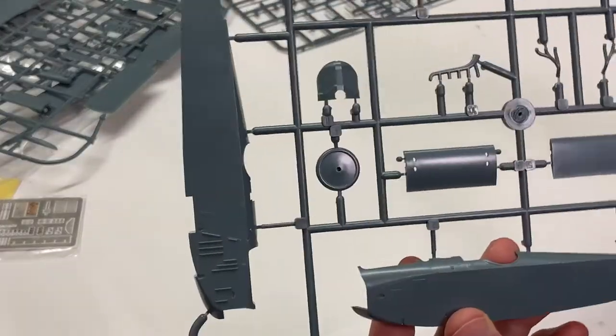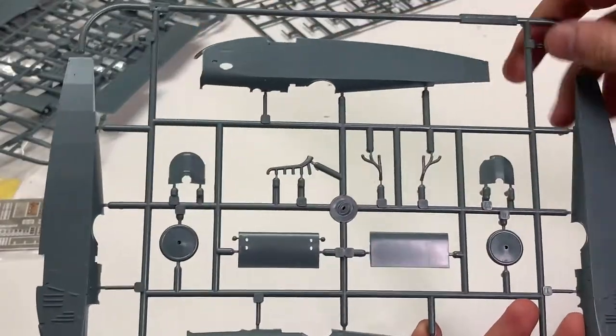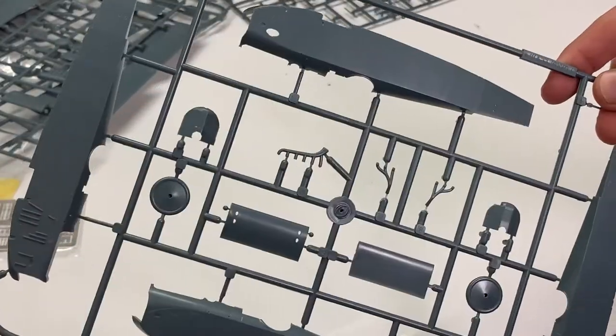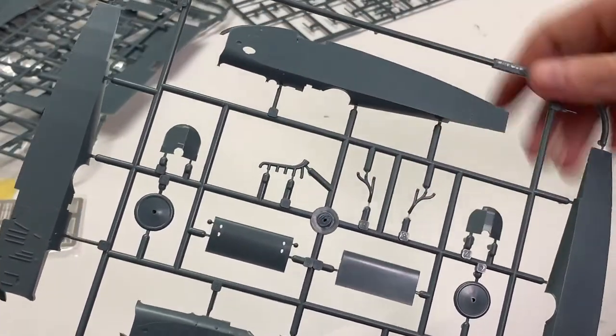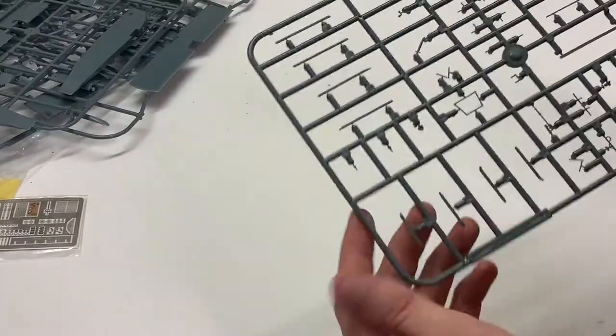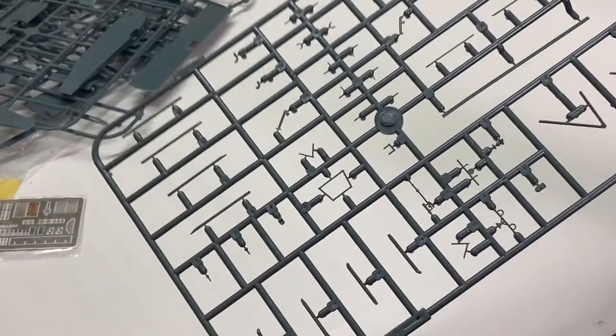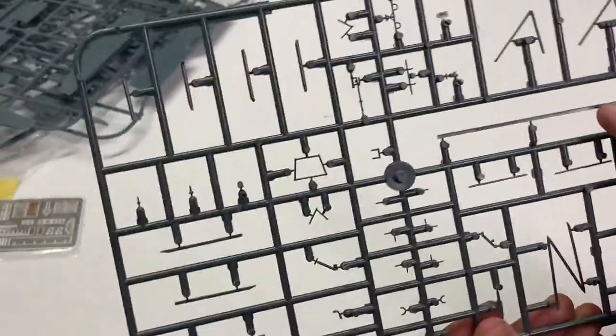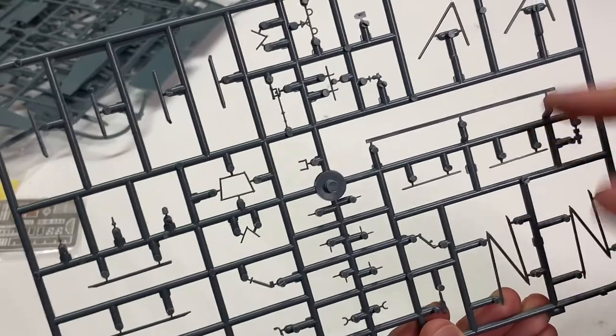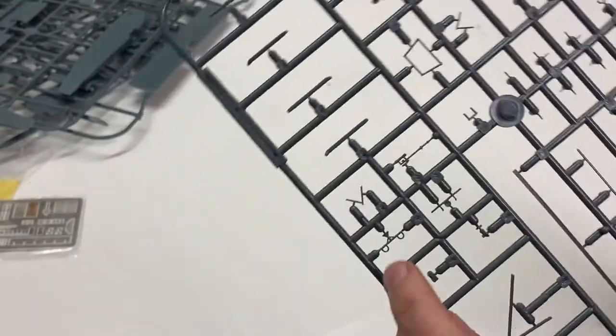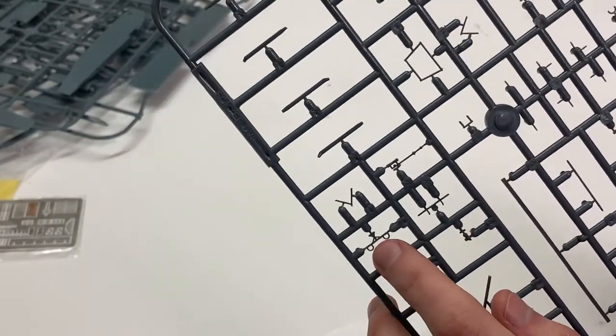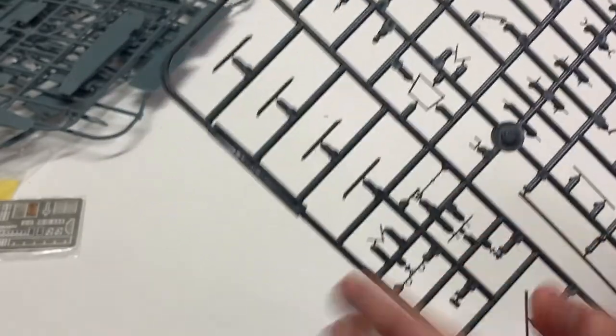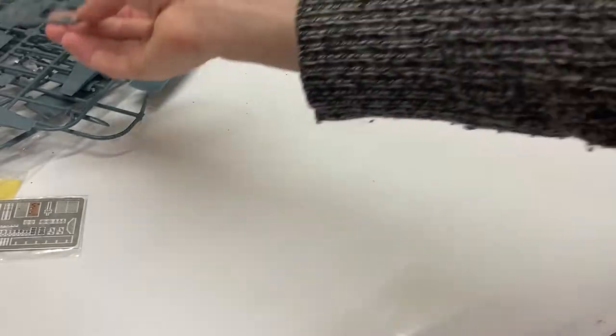The third sprue contains the fuselage parts as well as some bits of the wheels and for the interior you got the exhaust pipes there. And the last sprue is just smaller details including the wing struts, this weird stitch zipper thing they had on the bottom and more interior details. The rudder pedals right there and some smaller grab handles and hooks and small parts.